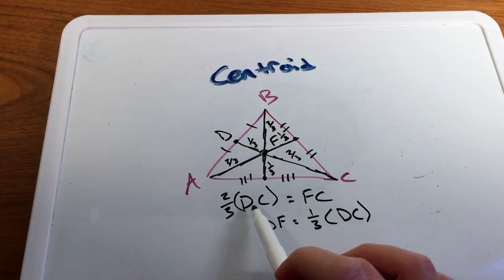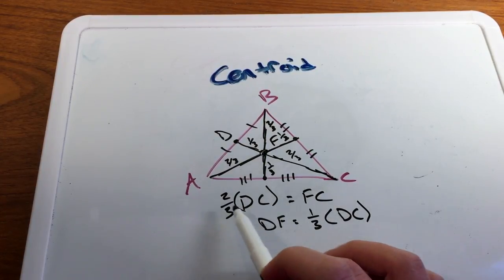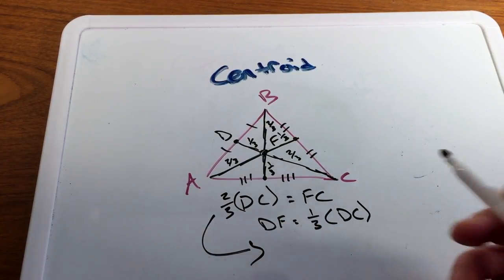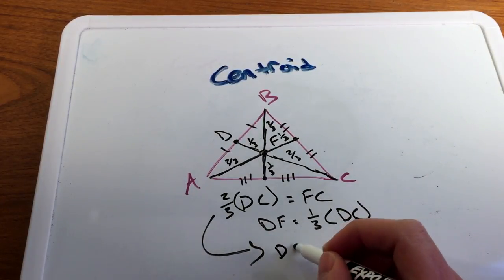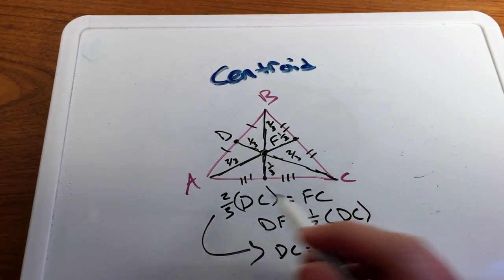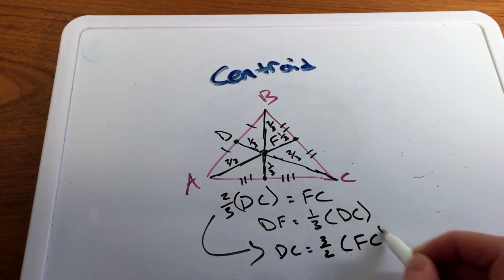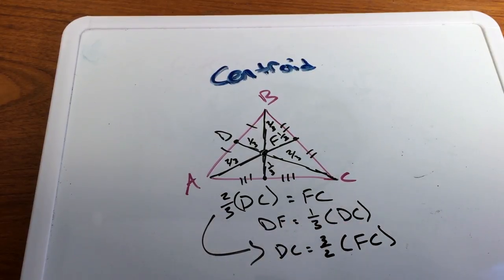The length of DC, that overall length, there's no bar up top, I'm referring to length. And times that by two-thirds, I get FC. And with this little equation here, you can rewrite this equation. So DC is equal to three-halves the length of FC. And you multiply this by three-halves on both sides and you get there.